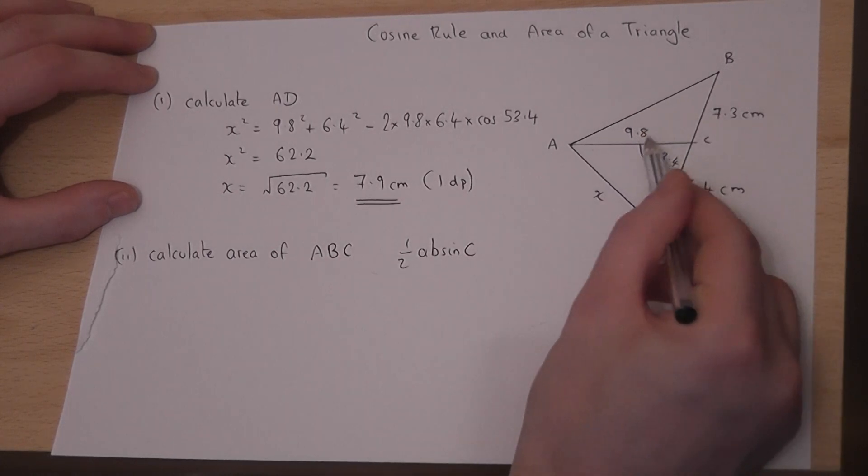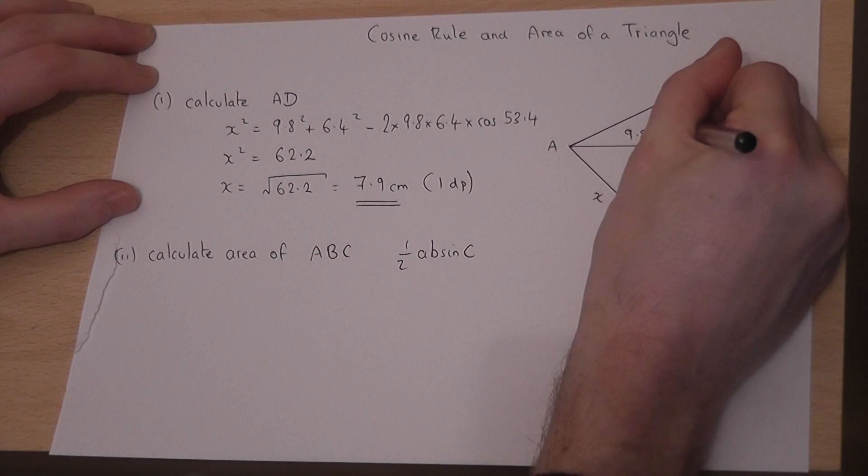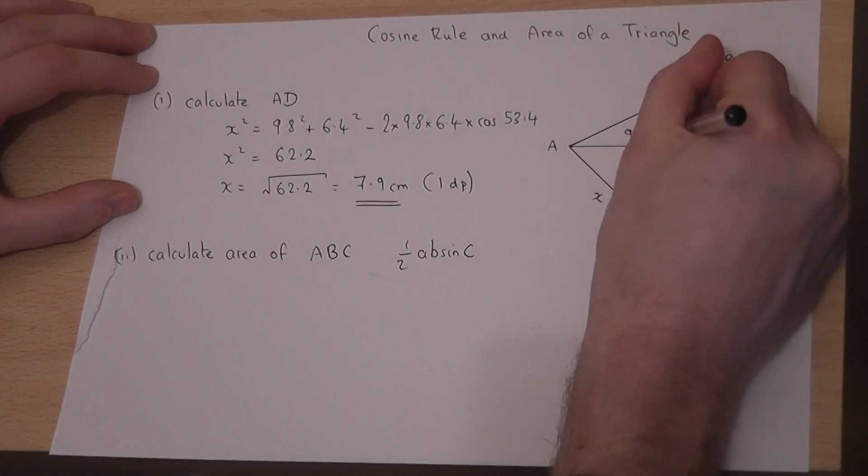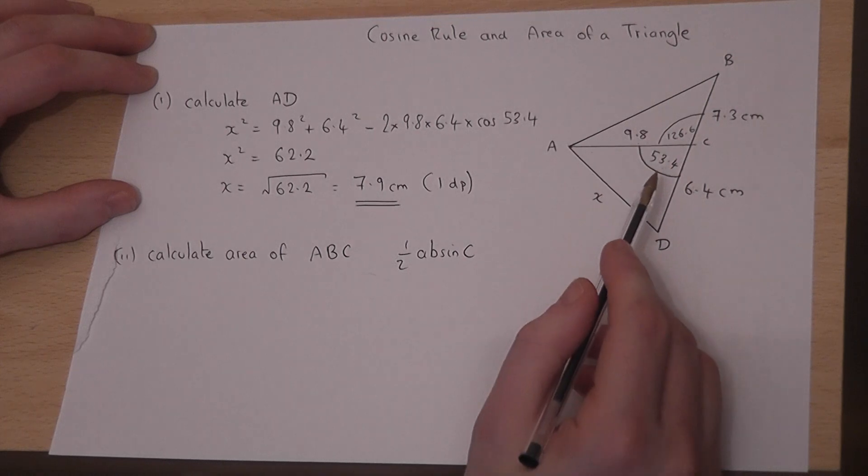We know two sides but we don't know the angle here. But we can find that quite easily because that there is a straight line. So to find the missing angle, I do 180 take the known angle. So 180 take 53.4 is 126.6. Those two add to 180.